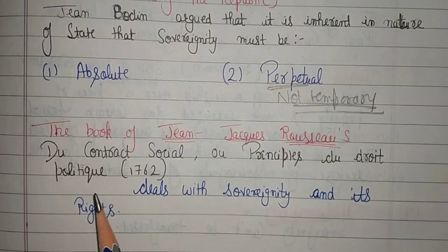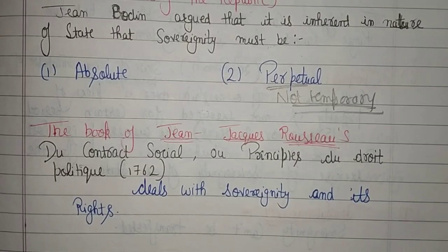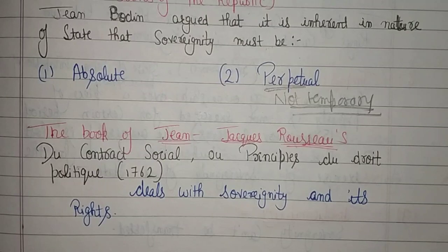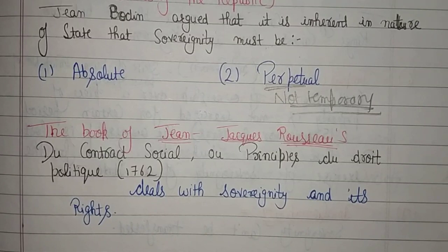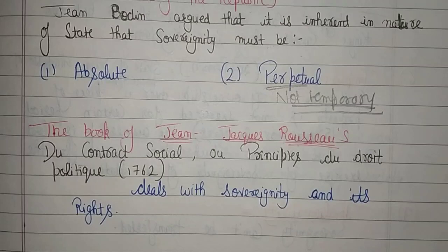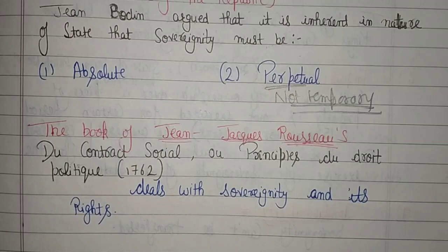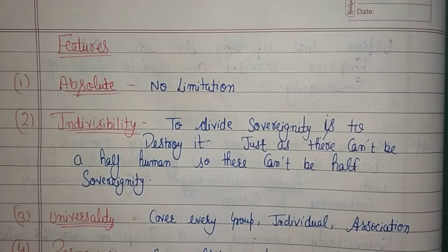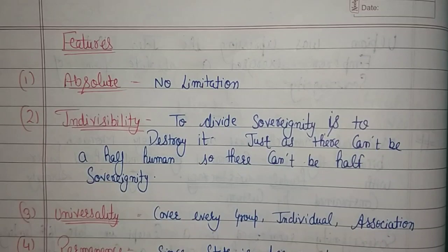हम proper French, Greek या Latin pronunciation नहीं पकड़ पाएंगे, इसके लिए sorry। Jean-Jacques Rousseau की book थी 'Du Contrat Social' — उसमें उन्होंने sovereignty और sovereignty से associated जितने भी rights होते हैं उनके बारे में बात की है। इतना mention करना है — book सारी explain नहीं करनी। उसके बाद sovereignty के features यानी characteristics पूछे गए हैं, तो एक-एक करके देख लेते हैं।